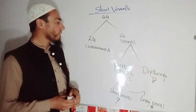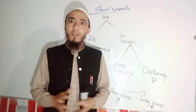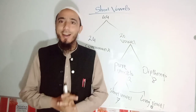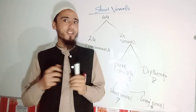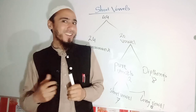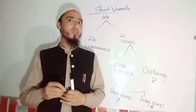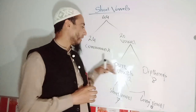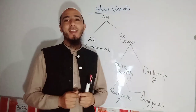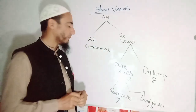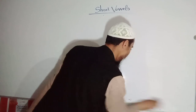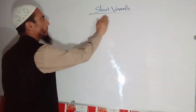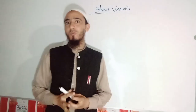Pure vowels are 12 in number. Pure vowel sounds are those sounds which are constant — they do not change and do not glide in articulation, they do not show movement in articulation. That is why they are known as pure vowels. So let's leave this background knowledge and come to our main topic: short vowels.